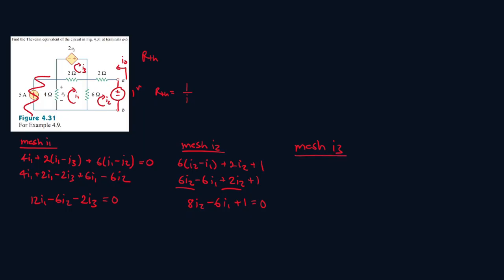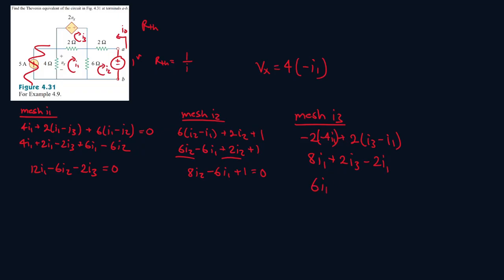Now let's do our final mesh. Mesh I3. So it will just be minus 2Vx plus 2I3 minus I1. Now let's find something to represent Vx as. Vx will be pretty much equal to 4 ohms times the current passing through it. So the current passing through it is negative I1. And it's negative because it's entering the negative terminal first. So 8I1 plus 2I3 minus 2I1. So 6I1 is equal to minus 2I3. So minus 3I1 is equal to I3.